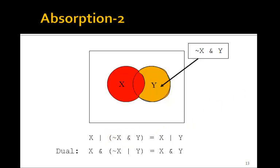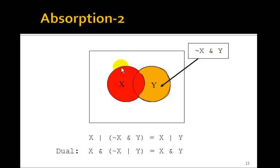What does the dual look like? Change ORs to ANDs and ANDs to ORs. NOT x OR y means everything outside of x plus everything inside of y — everything except the little area that just contains x. If you AND that with x, you're only left with a little football, which is x AND y.